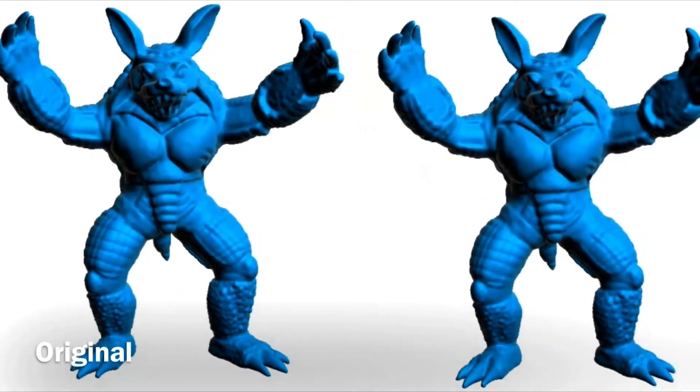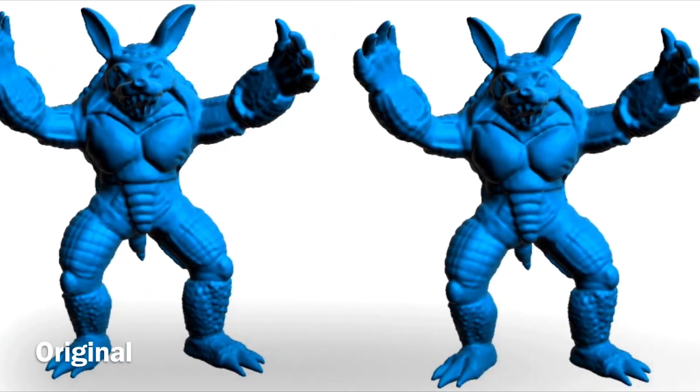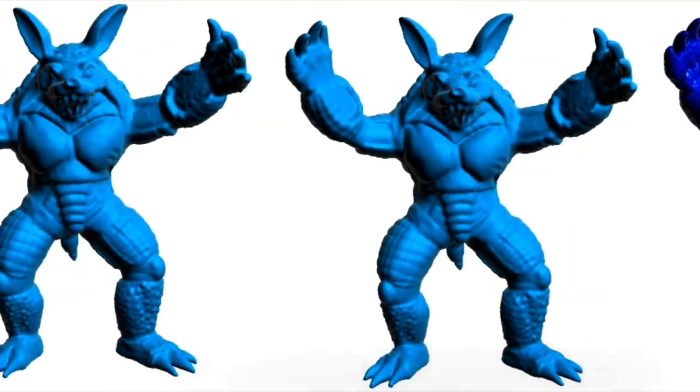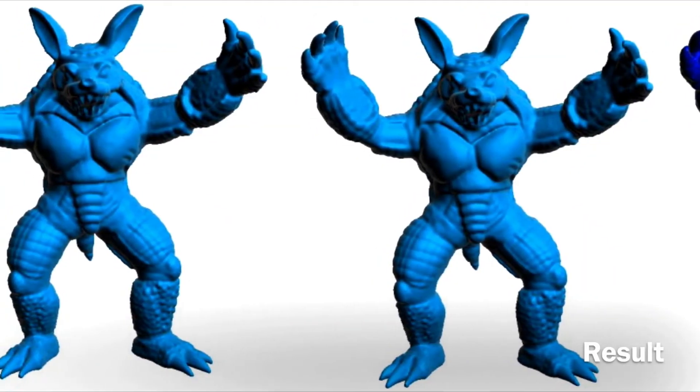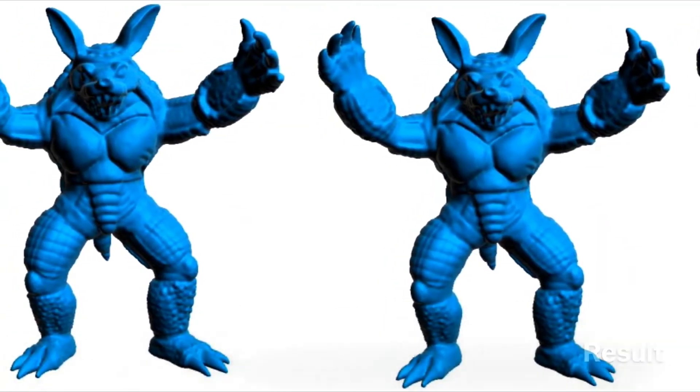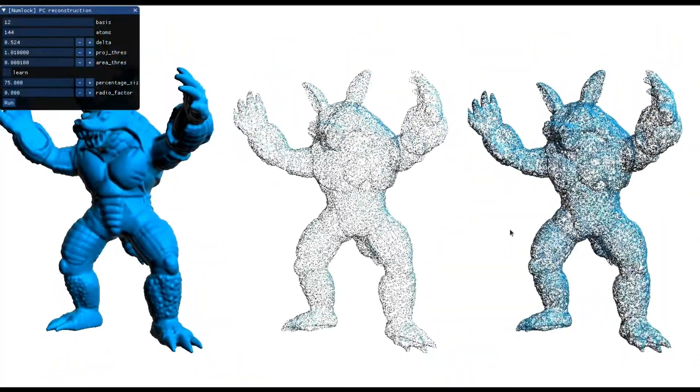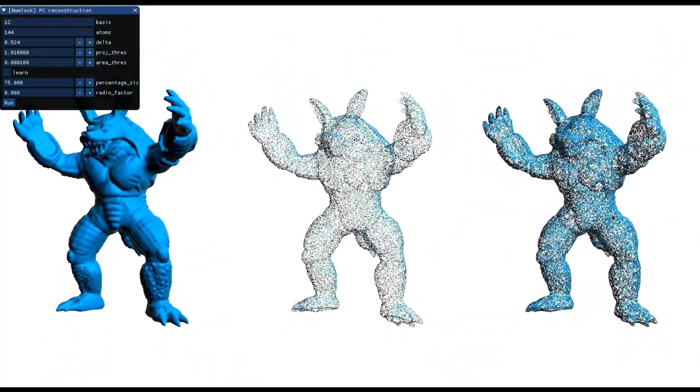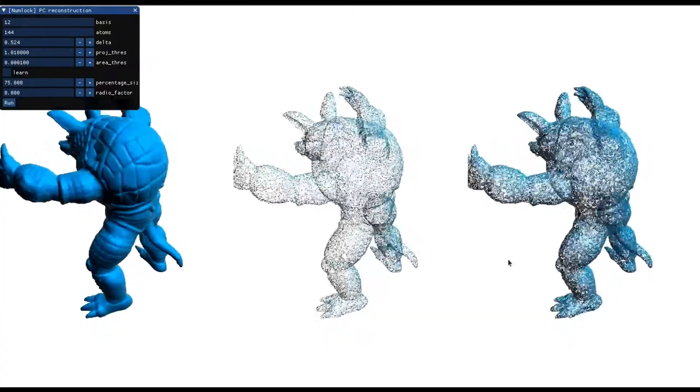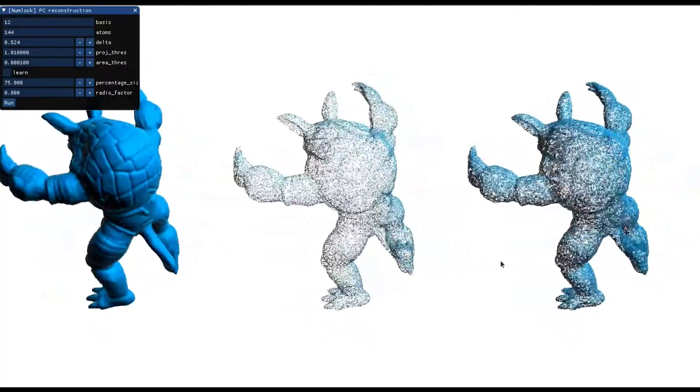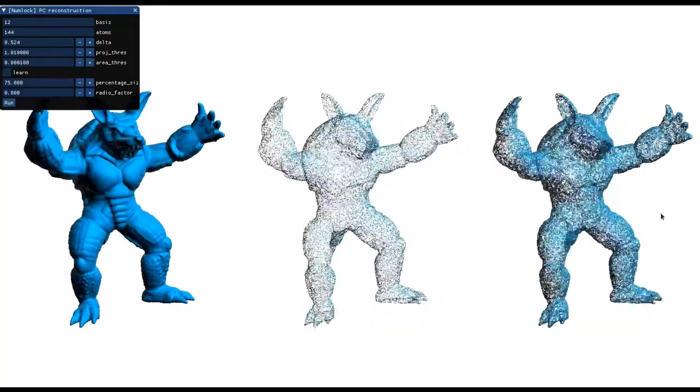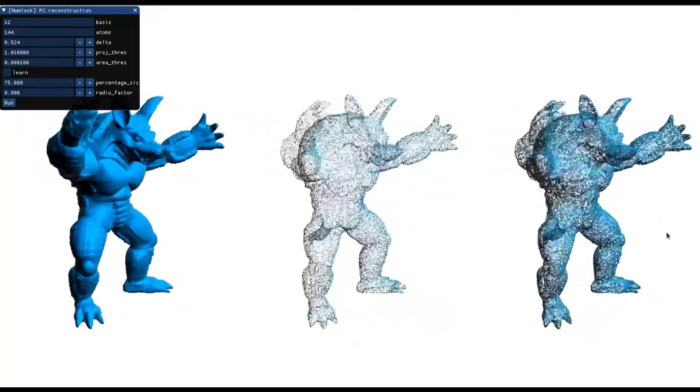We apply our method in applications like surface resampling and mesh compression. Since we obtain a continuous smooth representation of the original model, we are able to generate a point-based sampling at an arbitrary density level. Also, we can compute the normals of the resampled point set in a straightforward manner from our functional representation.